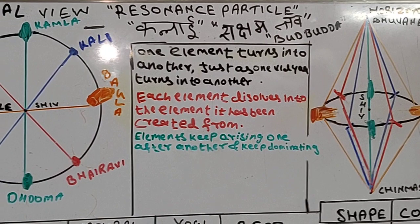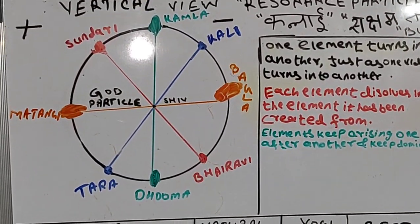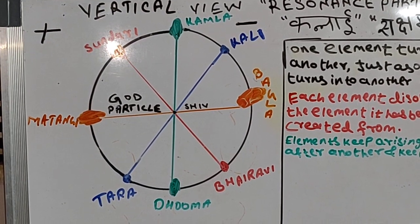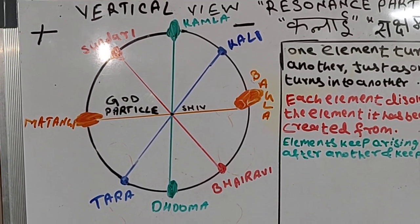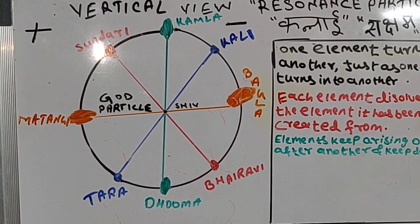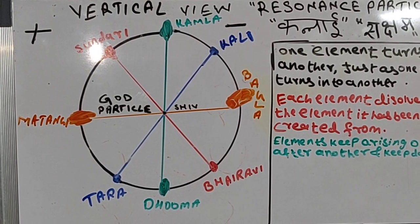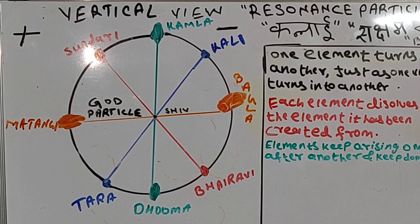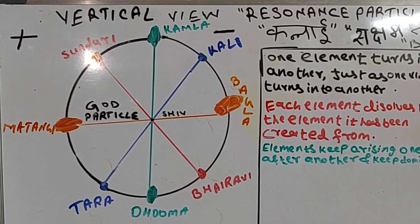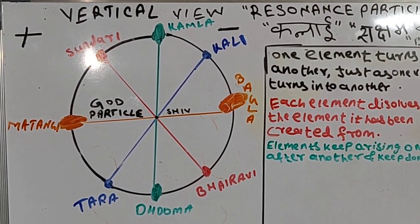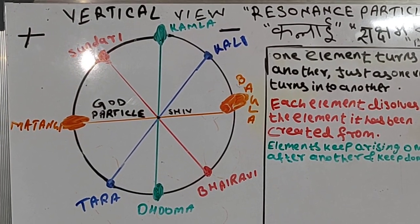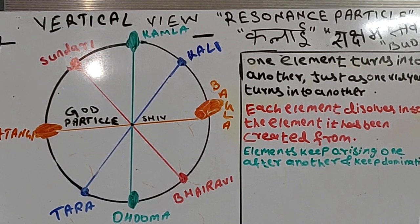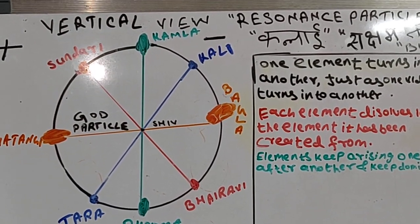This resonance particle helps you to create or destroy, because atomic bombs are also created out of this. The resonance particle helps you to create or destroy all matter — all living beings and non-living things in creation.